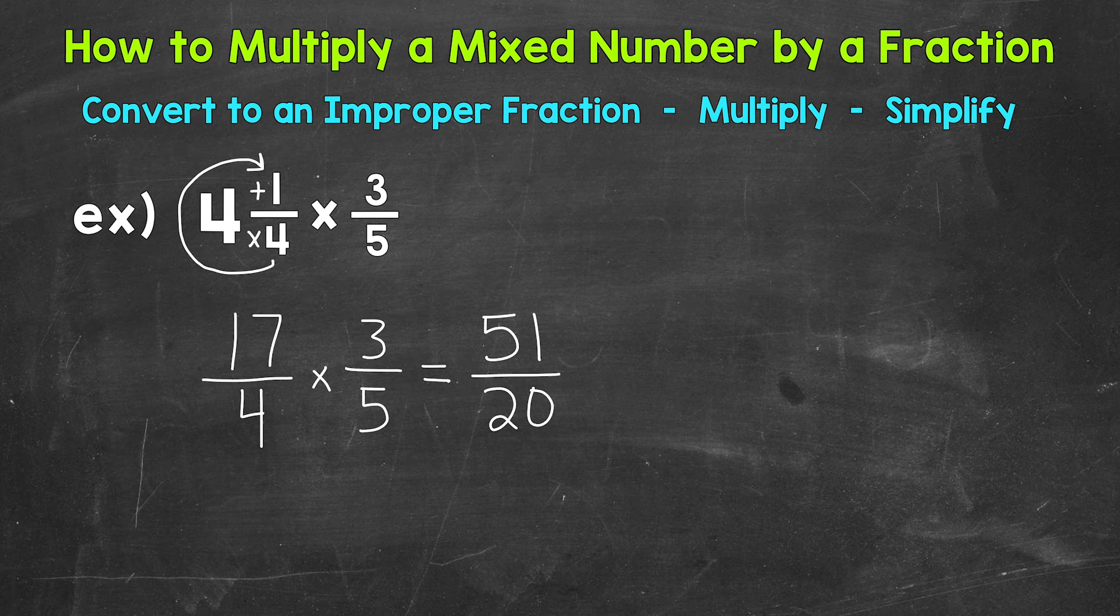And that's our final answer as an improper fraction. Now we can convert that to a mixed number. We do that by dividing. We divide our numerator, 51, by our denominator, 20.